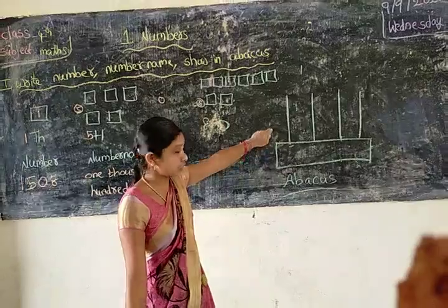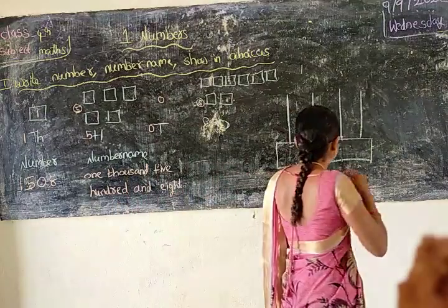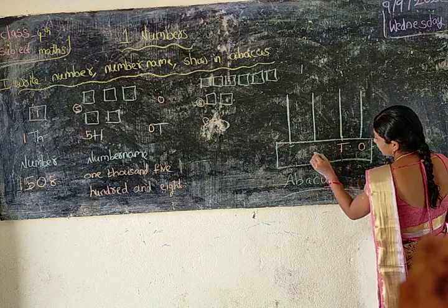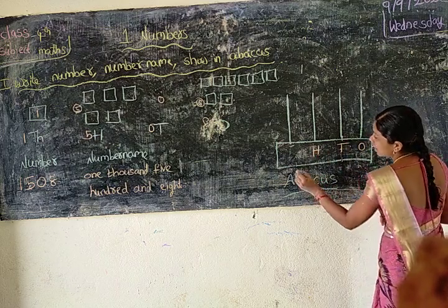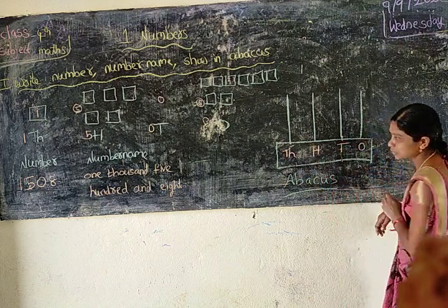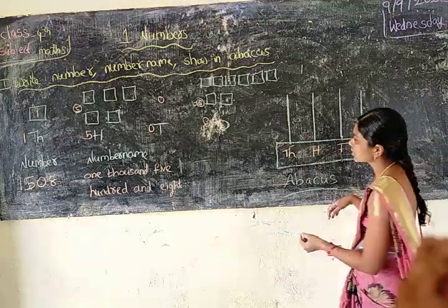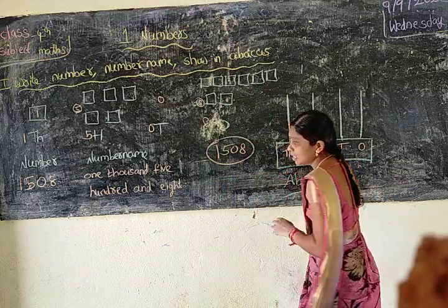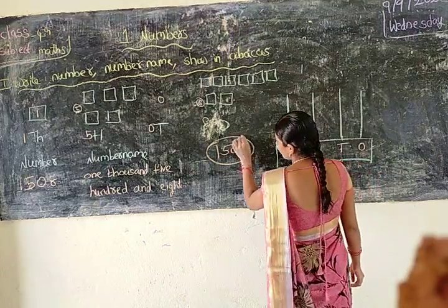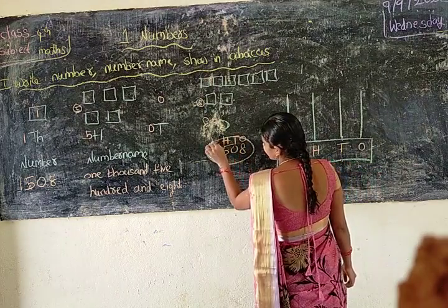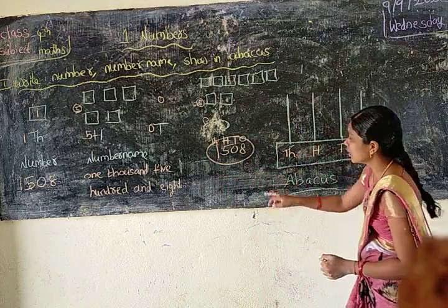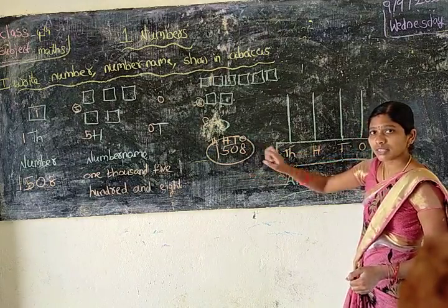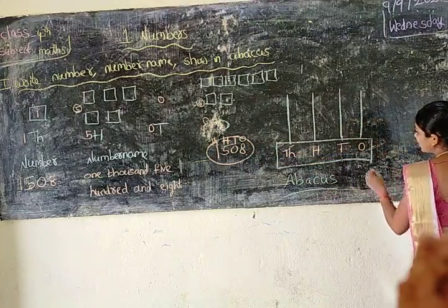And we should show on the abacus. On the abacus, these are the leaves: ones, tens, hundreds, and thousands place. So what is the number? One thousand, five hundred and eight. In the ones place, the digit is eight, so we should draw eight beads.